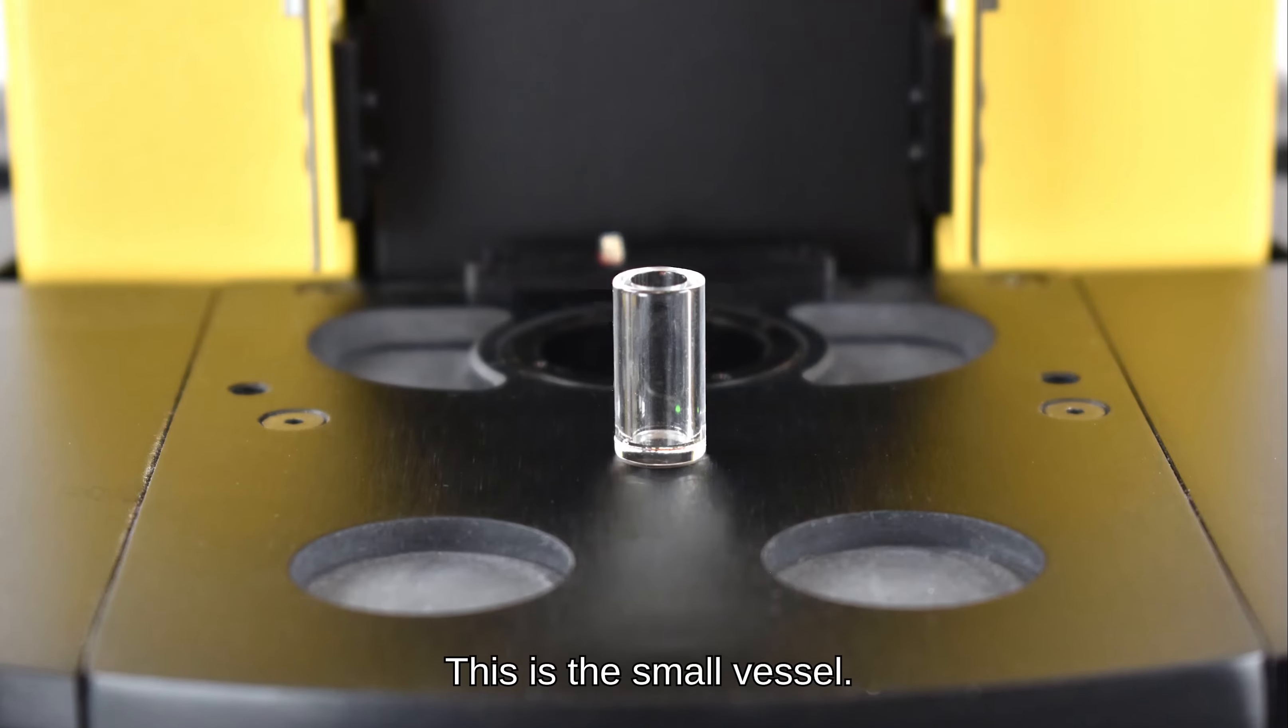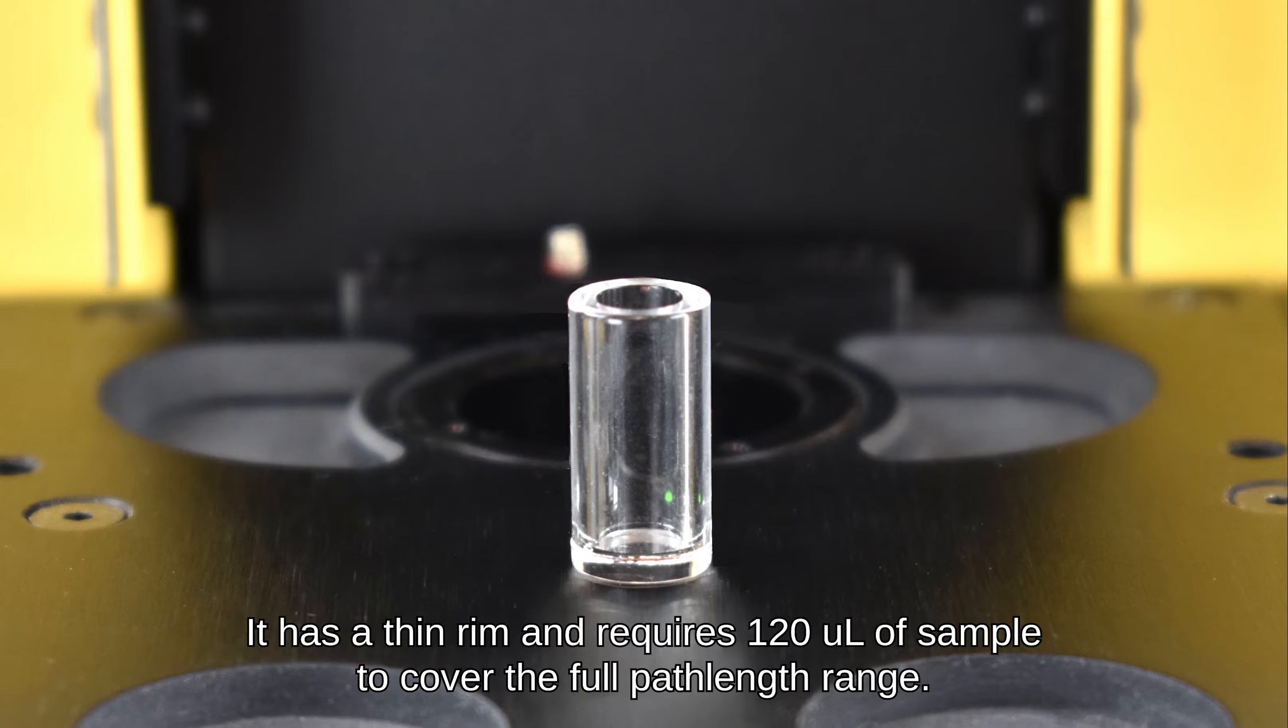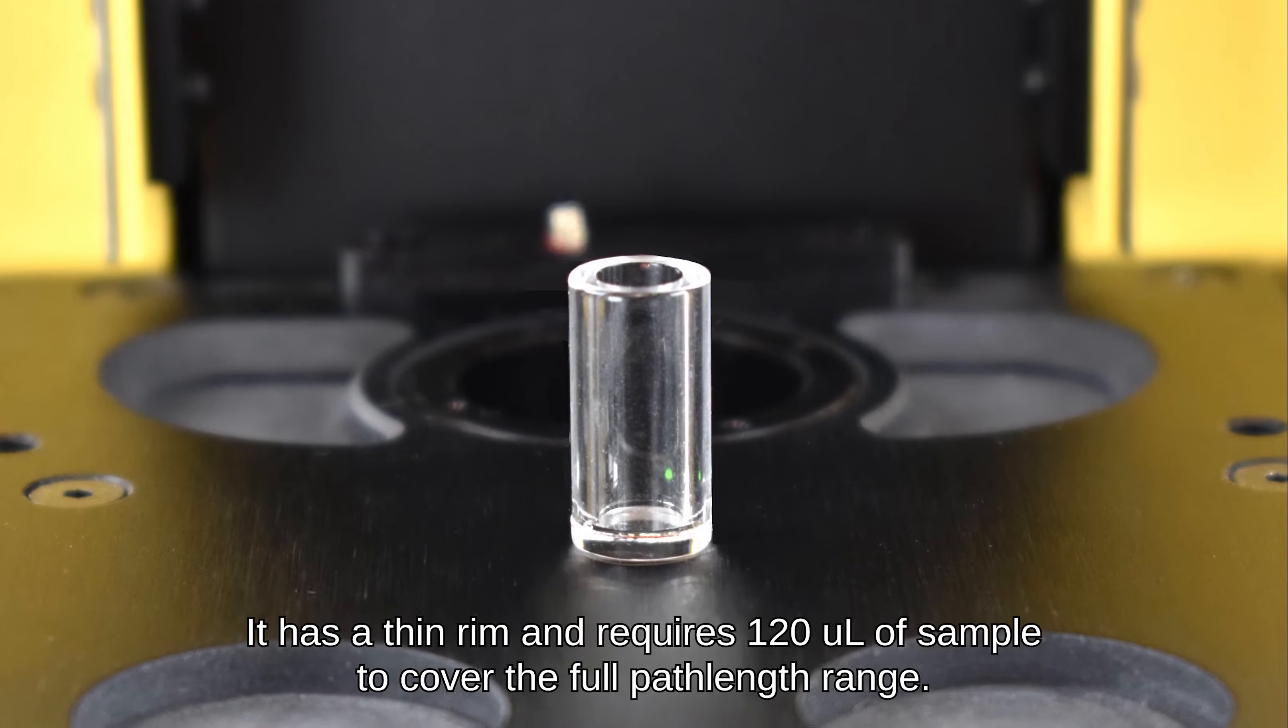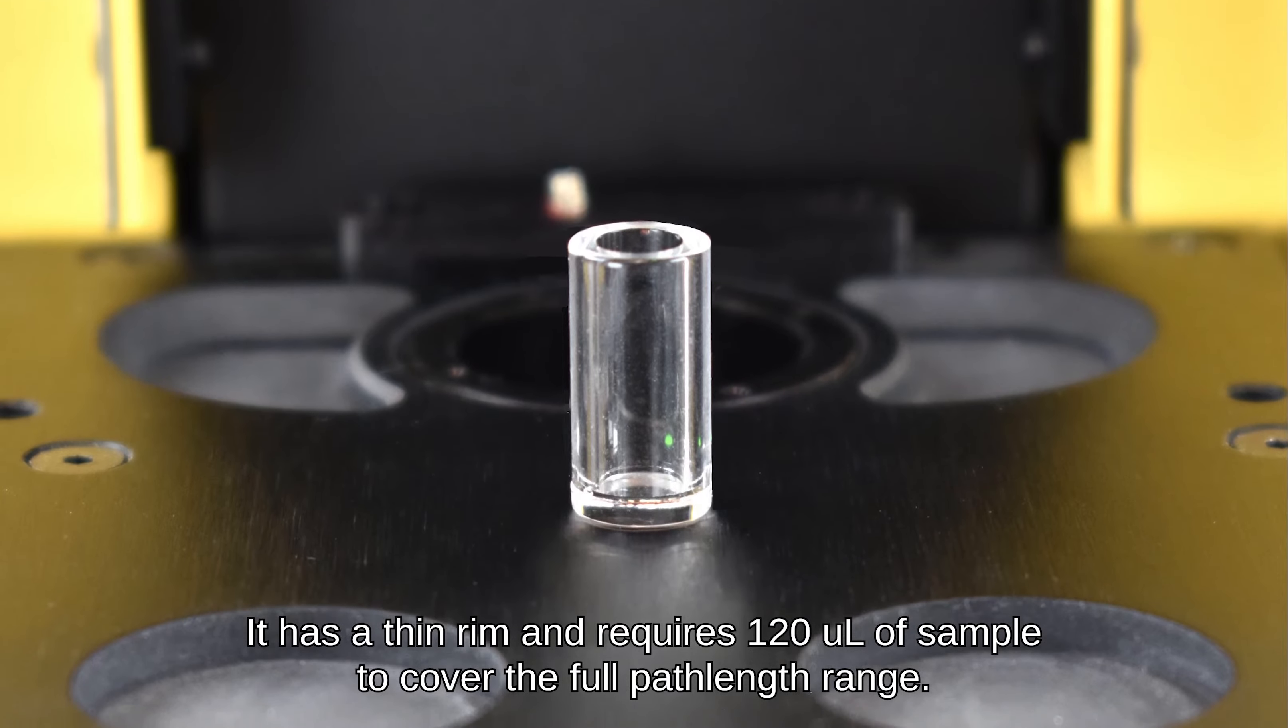This is the small vessel. It has a thin rim and requires 120 microliters of sample to cover the full path length range.